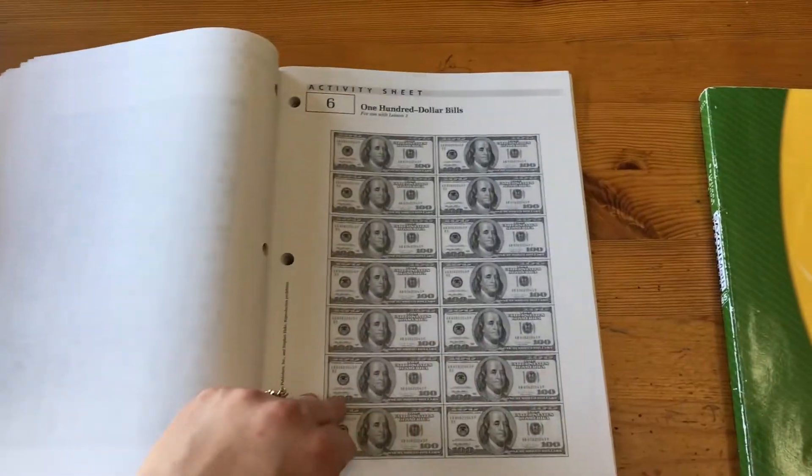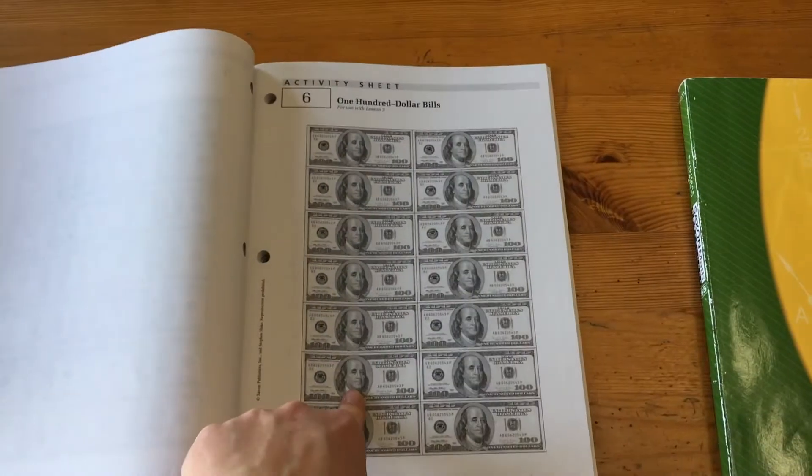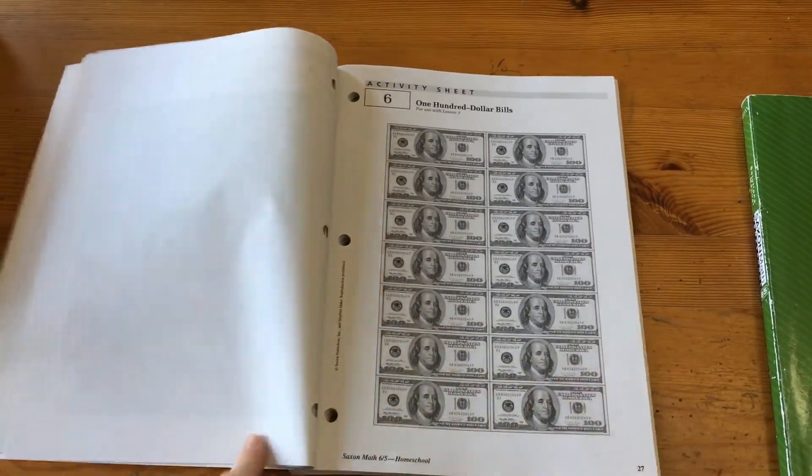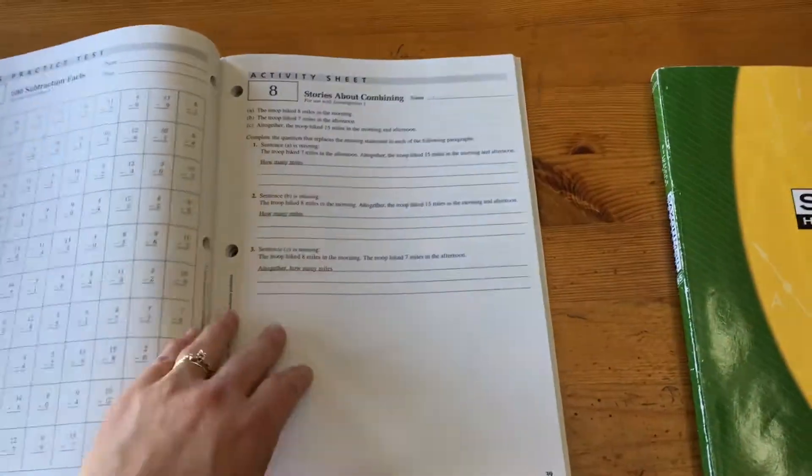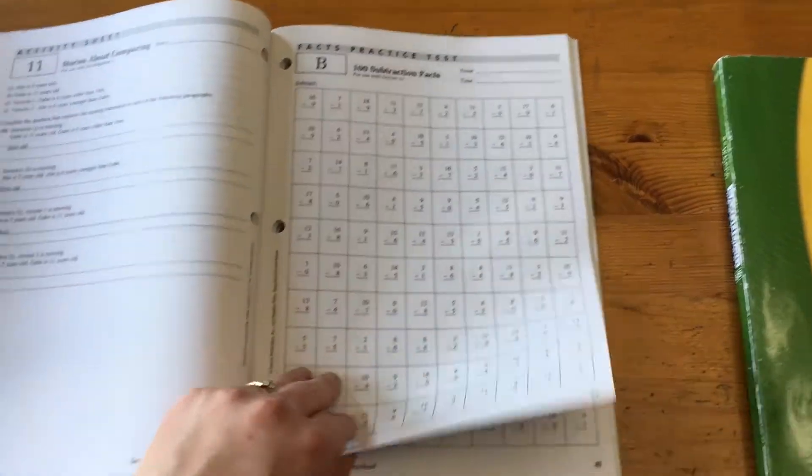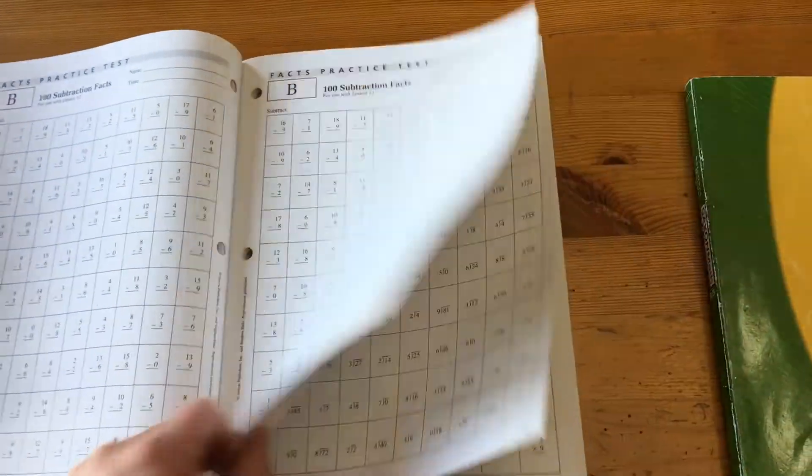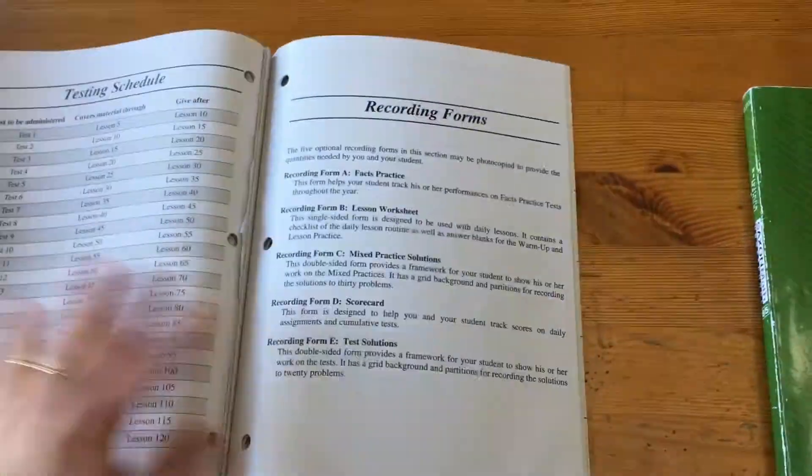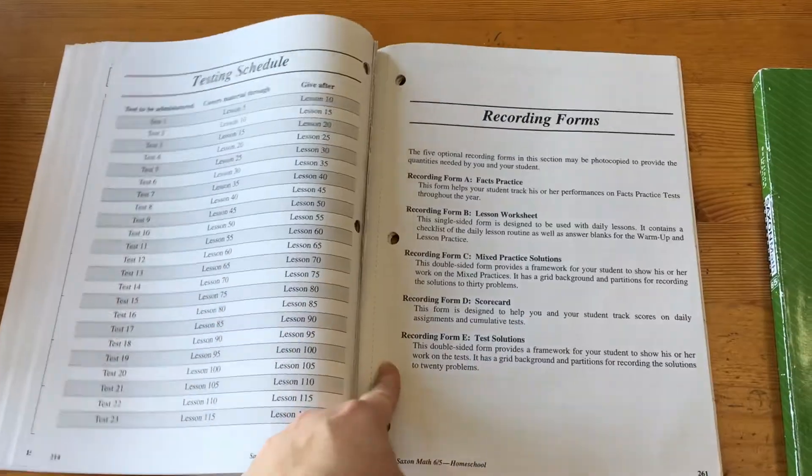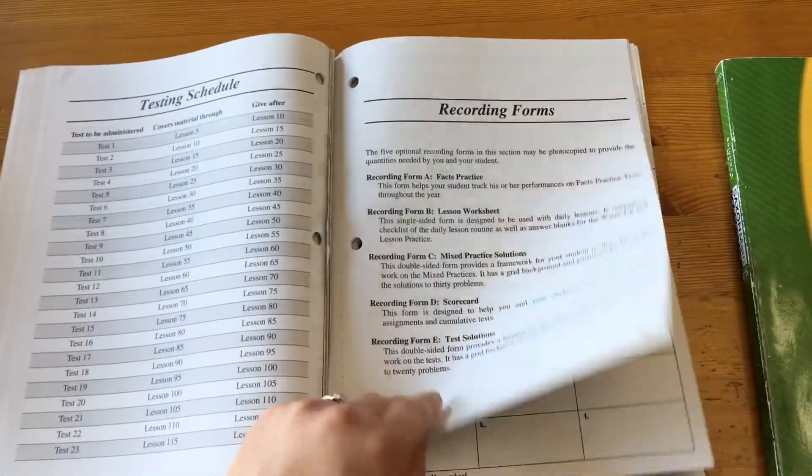Again, American program, American money. I'm not sure if I mentioned that in this video, but I did in the other one. So you may have to supplement if you're Canadian like us with Canadian money. Here's some of those sheets. And then the tests are at the back. There's a testing schedule. All the tests have been used because he's already finished this program.